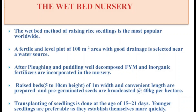In wet bed nursery, a fertile, level plot of 100 square meters area is selected near a water source. Care must be taken that the drainage facilities in this area are very good. After field selection, ploughing and puddling are done, and well-decomposed farmyard manure and inorganic fertilizers are incorporated.